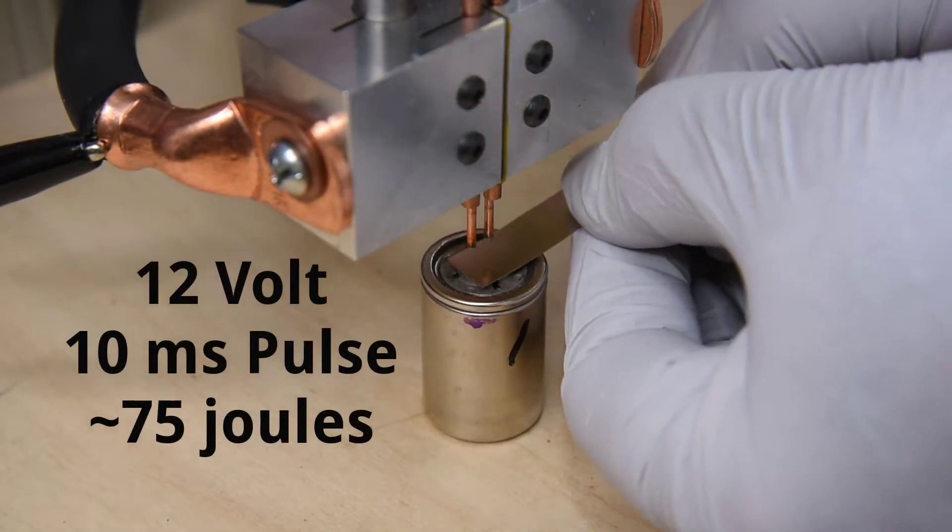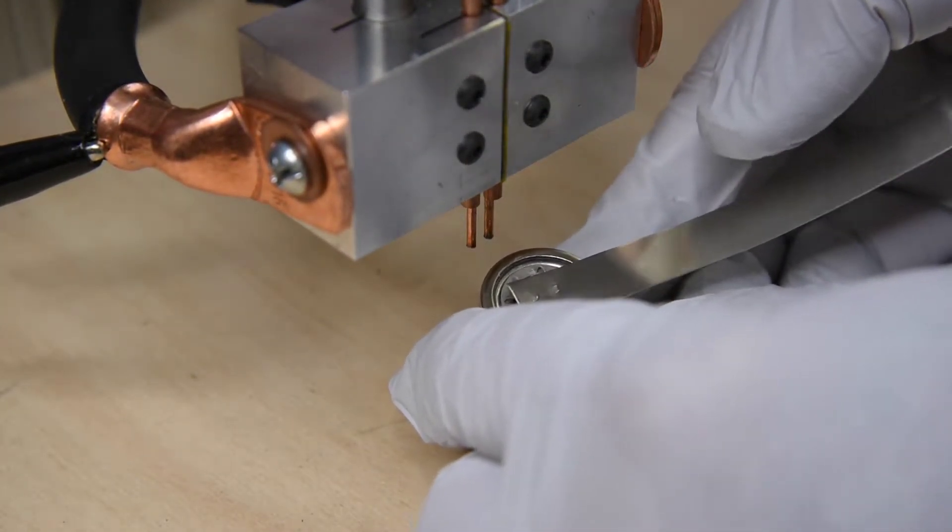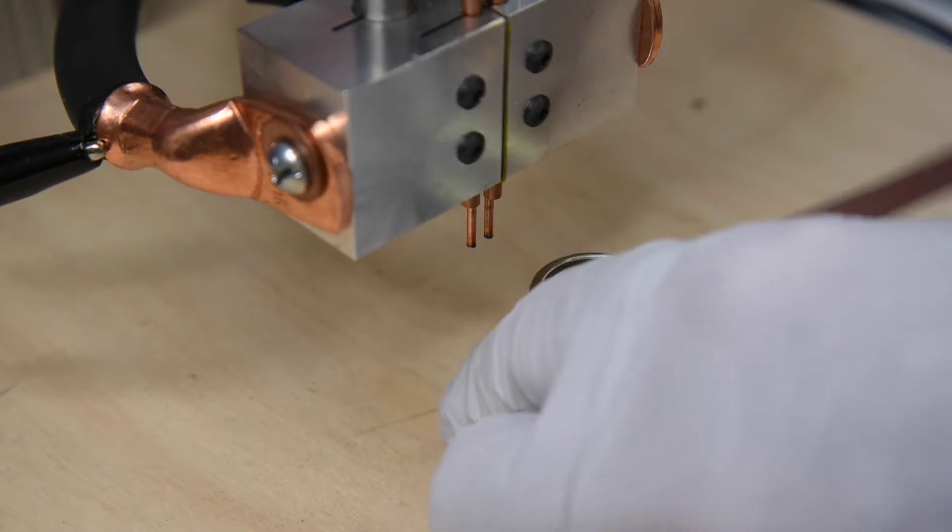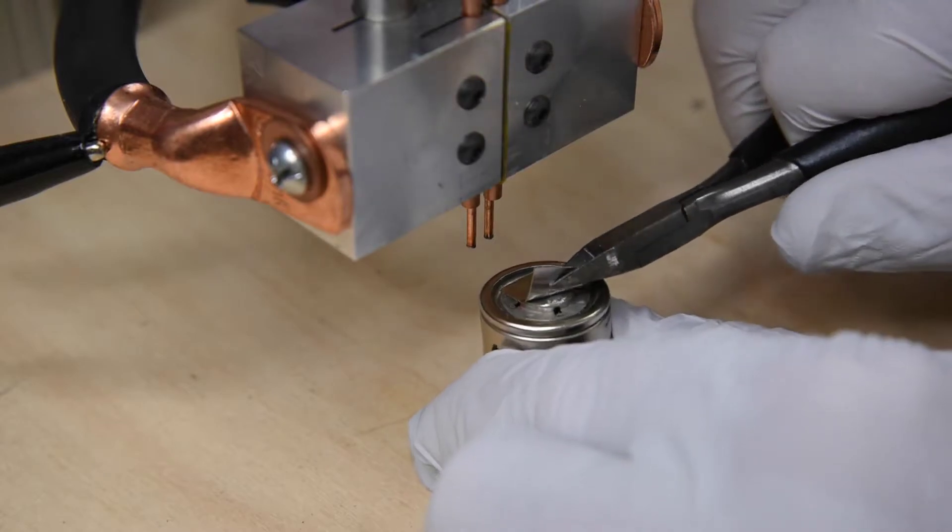Now going to 75 joules it starts to look a lot better. I cannot pull the strip off by hand, at least not by hand without the risk of slicing a finger.